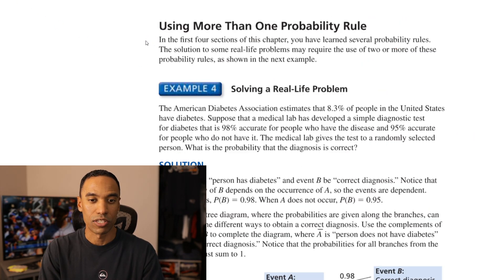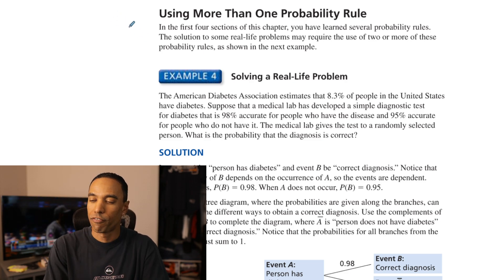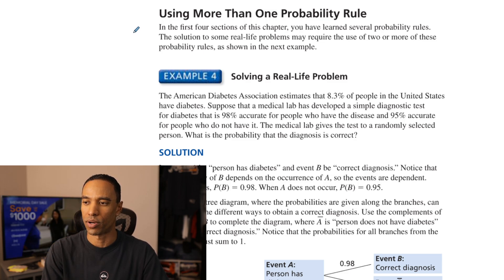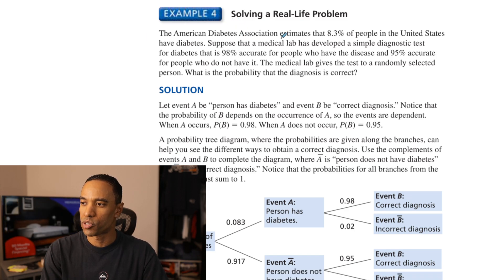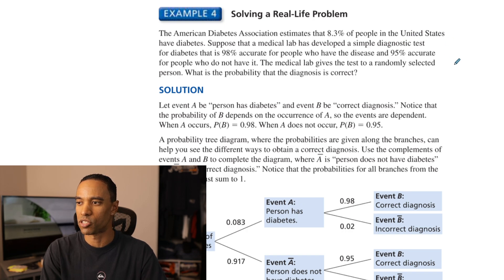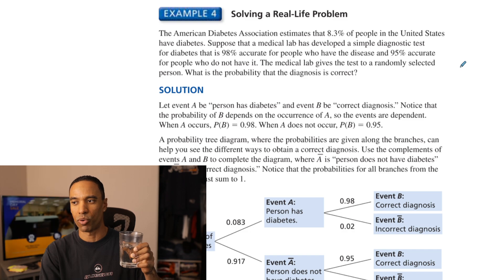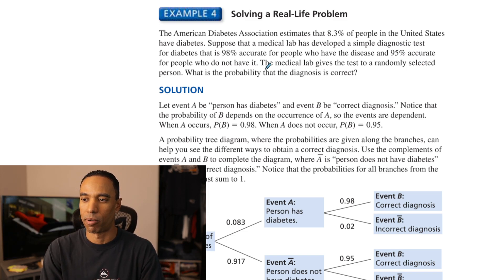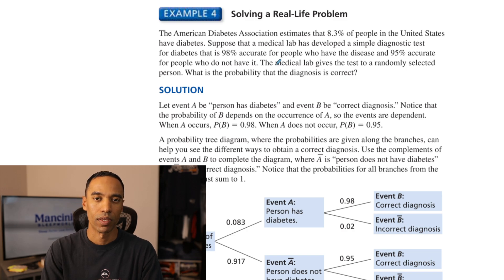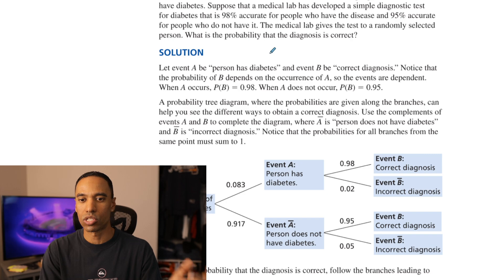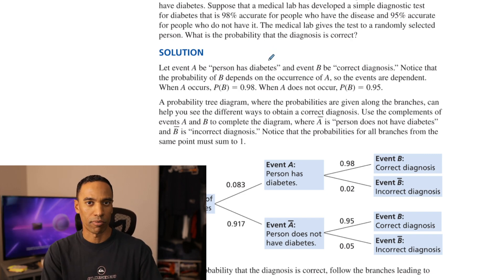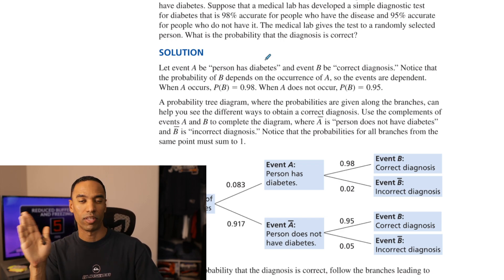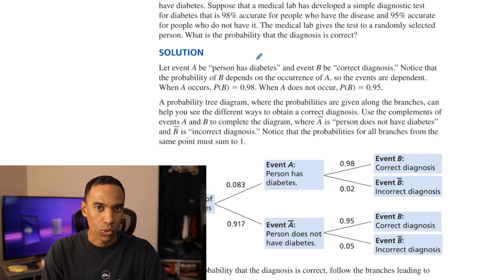Using more than one probability rule: the ADA estimates 8.3% of people in the United States have diabetes. A medical lab developed a simple diagnostic test that is 98% accurate for people who have the disease and 95% accurate for people who don't. The probability of a correct diagnosis depends on whether or not you have diabetes, making these dependent events. We'll use previous knowledge about independence, complements, and mutual exclusion alongside the new formulas.